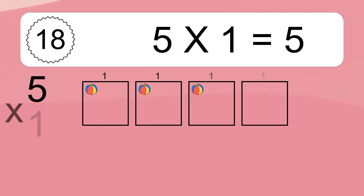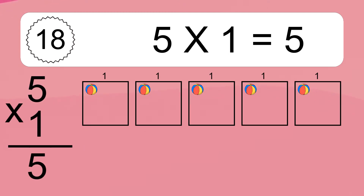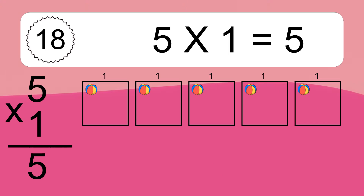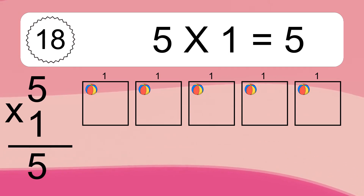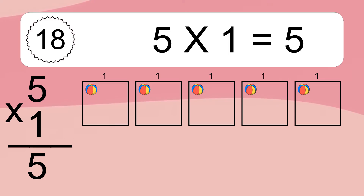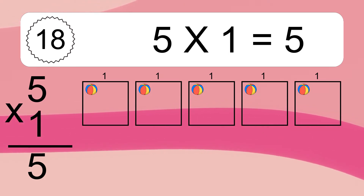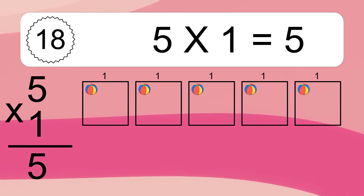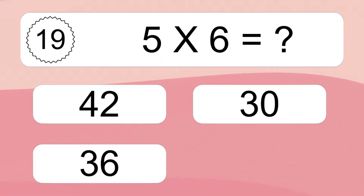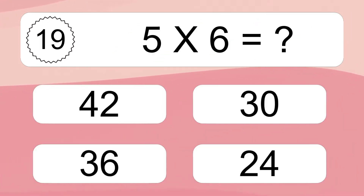5 times 1 equals what? 5 times 1 equals 5. We have 5 boxes, and each box has 1 colorful ball inside. If you count all the balls in all the boxes together, you will have 5 times 1 balls. This equals 5 balls.